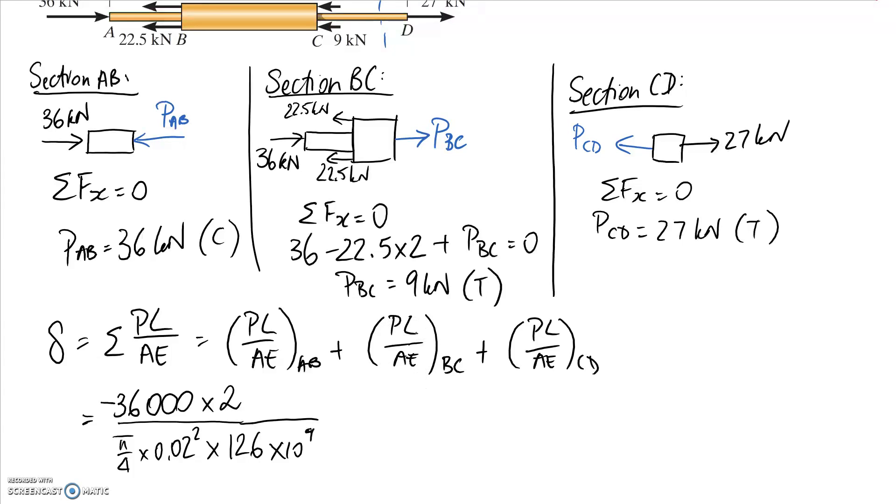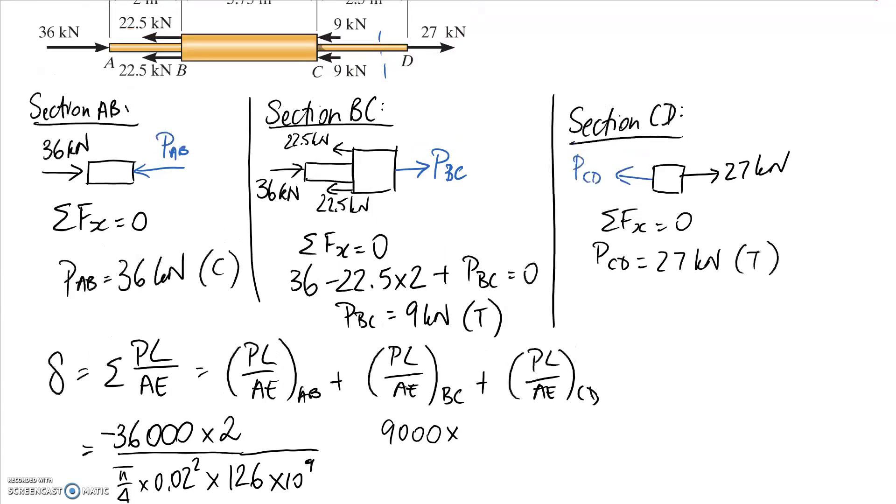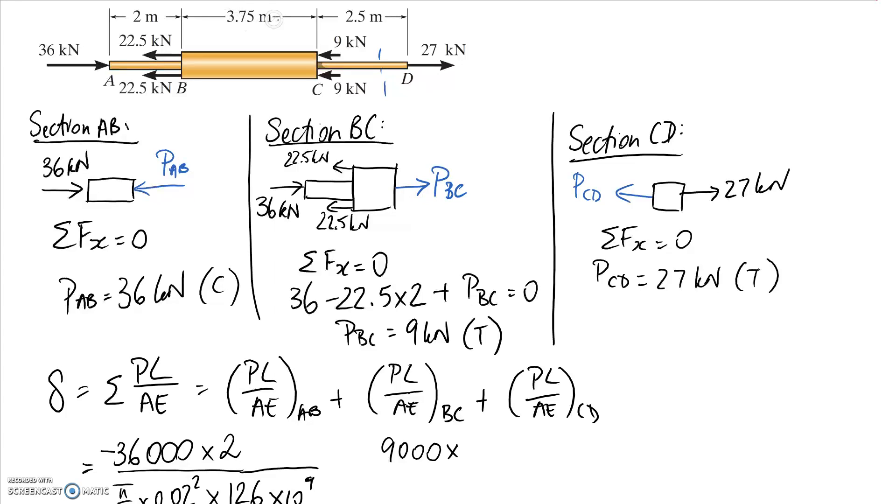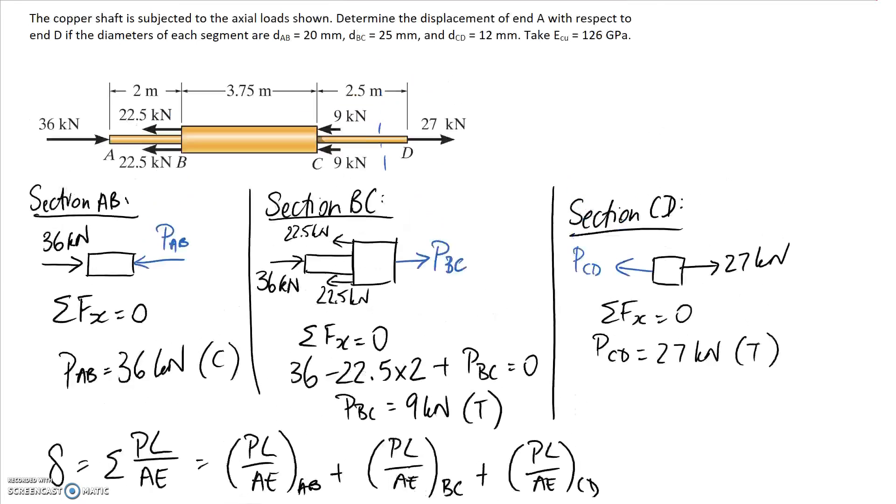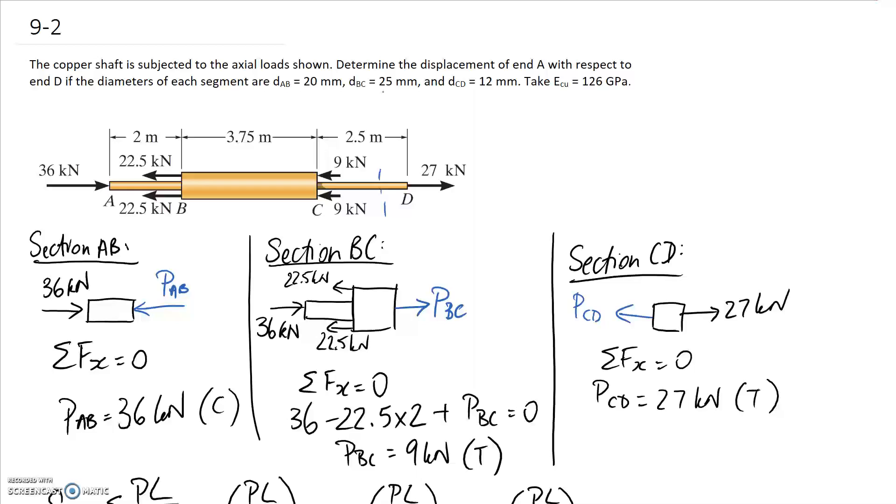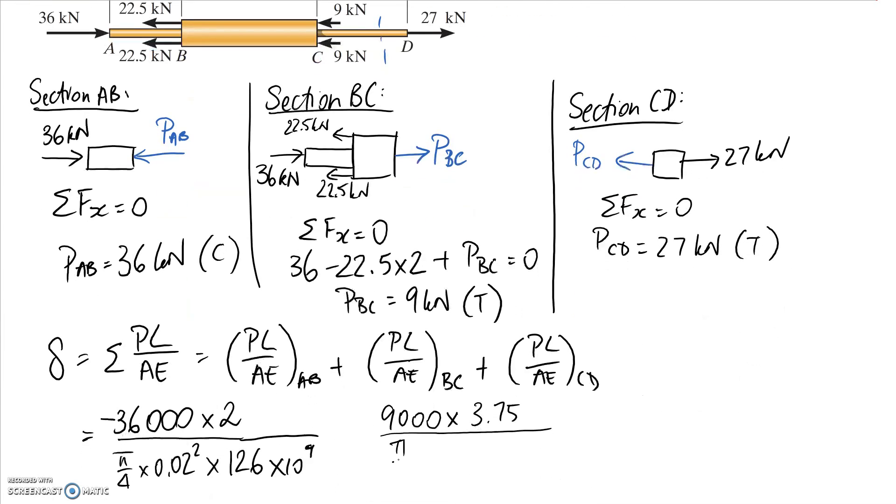Alright, so we'll move on to BC. So the force in BC we said was 9 kN or 9,000 in newtons. We need to multiply the length of BC and we know that that's 3.75 meters. We need to divide by the cross-sectional area and we're told that BC is 25 millimeters. So it's going to be pi on 4 times 0.025 squared. And we have the same Young's modulus as before. So this section we said was in tension which means when we put it into the equation we need to put it in as a positive value.